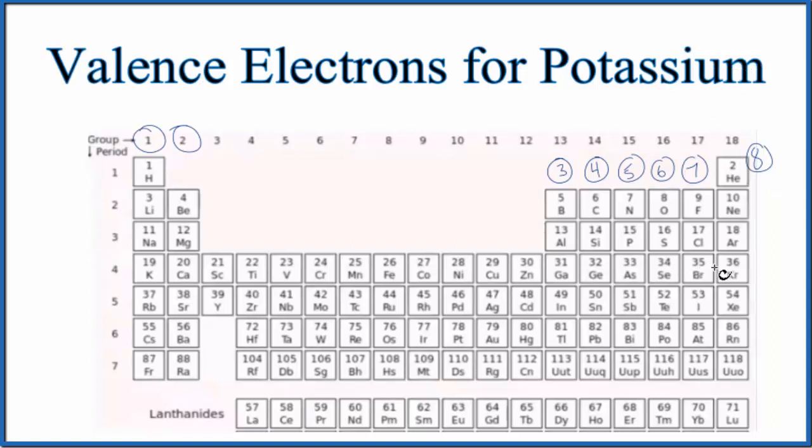The first is just to look at the periodic table. So when we look on the periodic table, right here is potassium. It's in group 1 on the periodic table.